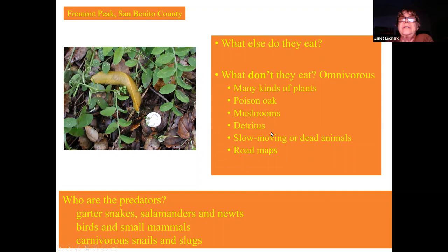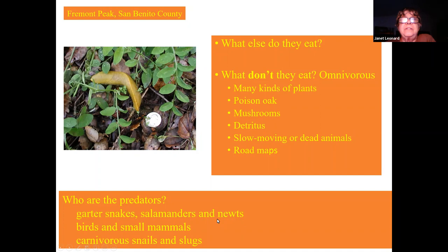They also eat various kinds of detritus. They have no objection to eating slow-moving or dead animals — I once collected one that was chewing on a road map up in the Santa Cruz mountains. Major predators of banana slugs include garter snakes, but only certain populations, salamanders and newts, birds and small mammals, and carnivorous snails and slugs. Like many animals, when they're small a lot of things will eat them, but as they get bigger they get what we call a size refuge — they're too big for a lot of things to cope with.